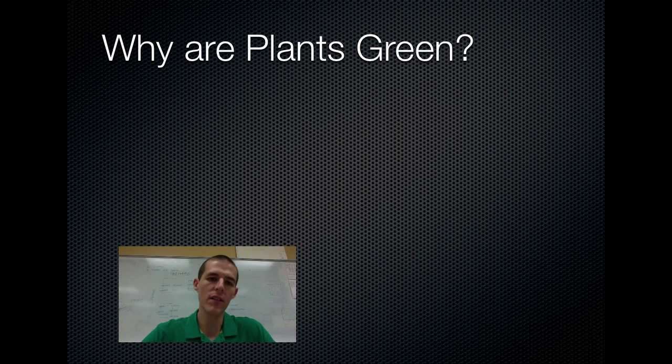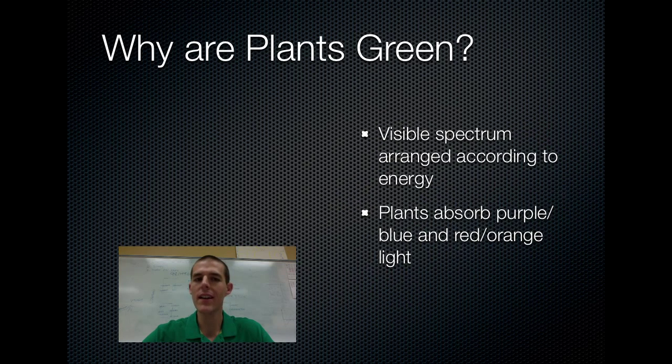Before you can understand the process of photosynthesis, you need to understand a little bit about light and electrons. Now I often get a question from students about why plants are green. Well let's talk about the nature of color. Any color you see is a result of a certain wavelength of light being reflected from an object. So all light that we can see is organized according to wavelength and energy. On one end of the spectrum, you have light that is low energy with a long wavelength. On the other end of the spectrum, you have high energy light with a very short wavelength.